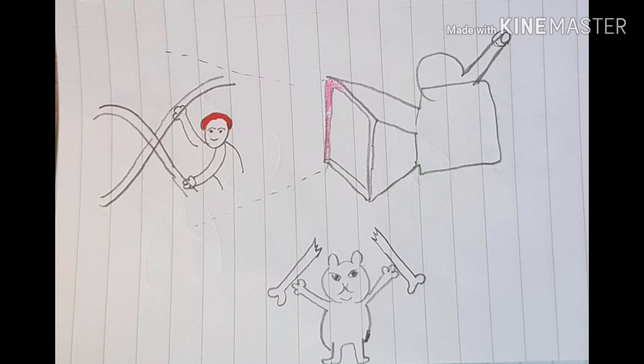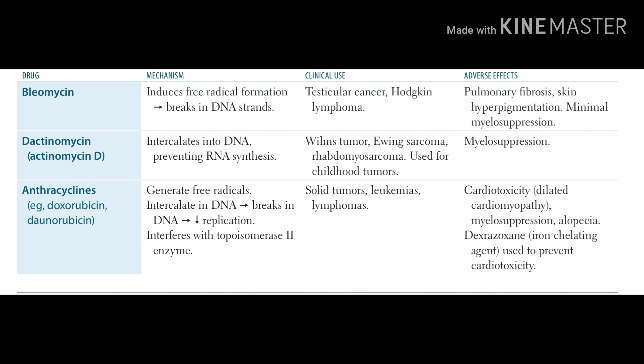Because the child is featured in the image, this drug is basically used in childhood tumors: rhabdomyosarcoma, Ewing sarcoma, and Wilms tumor. The cat is breaking a bone, reminding you of the adverse effect, which is myelosuppression. In the textbook: dactinomycin intercalates into DNA, prevents RNA synthesis, is used in childhood tumors (rhabdomyosarcoma, Ewing sarcoma, Wilms tumor), and the adverse effect is myelosuppression.